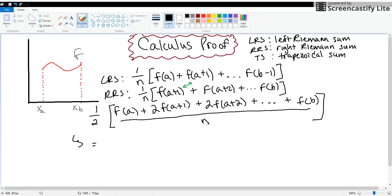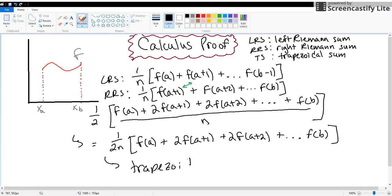So then if I were to rewrite this multiplying 1 half times 1 over n, I would get 1 over 2n times [f(a) + 2f(a+1) + 2f(a+2) continuing up all the way to f(b)]. And I would close this expression. And as you've probably noticed, this is the formula for the trapezoidal sum.